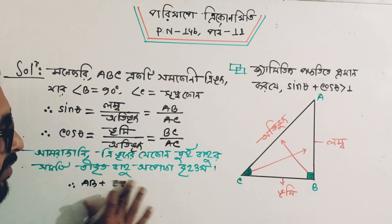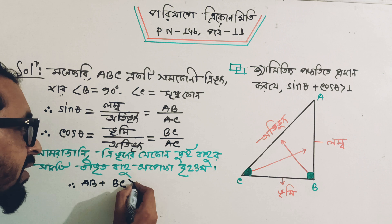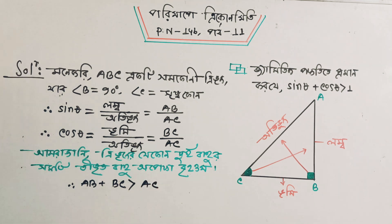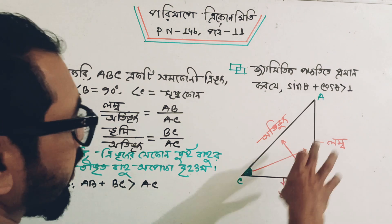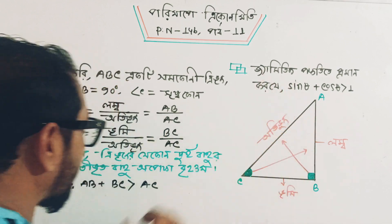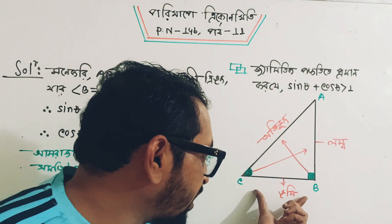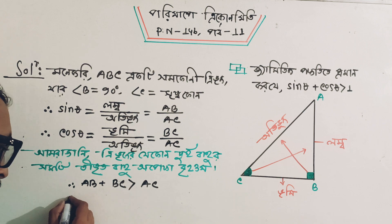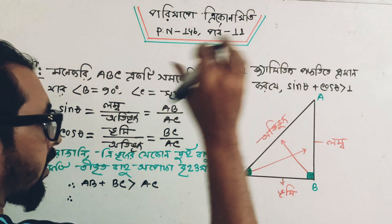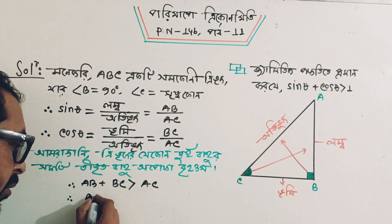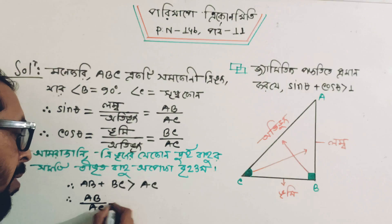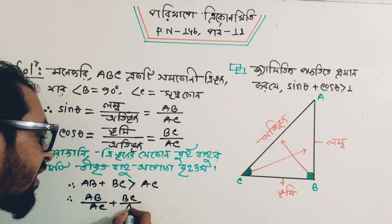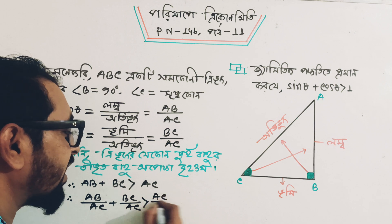B plus B plus B plus B plus C is greater than A plus C. So AB plus BC is greater than AC. I'll show you in the comments and I'll show you how many — SE is greater than SC divided SE.